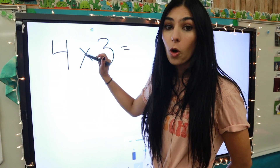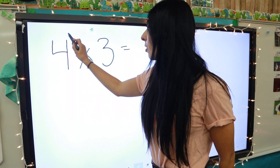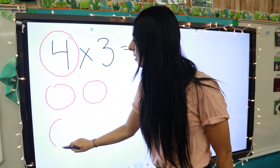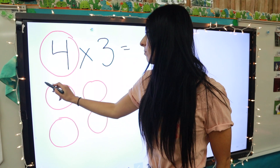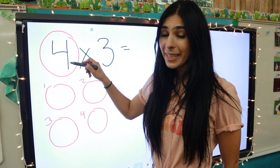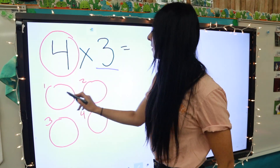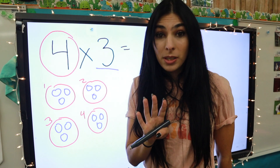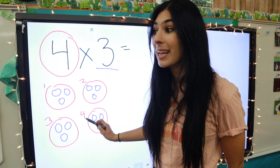Alright, one more. Our new equation: four times three. Remember, you get to pick - one number has to be big circles, the other number has to be little circles, that's the only rule. So let's do four big circles - one, two, three, four - and I number mine so I remember that's the number I copied. Now I need my three little circles to go inside each big one.